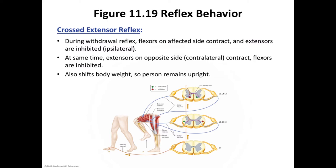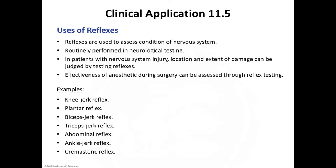Make sure you see table 11.6 to summarize the reflex arc. Normal reflexes require and reflect normal neuron functions. Therefore, reflexes are commonly used to assess the condition of the nervous system. For instance, an anesthesiologist initiates a reflex in a patient being anesthetized to determine how the anesthetic drug is affecting nerve functions.